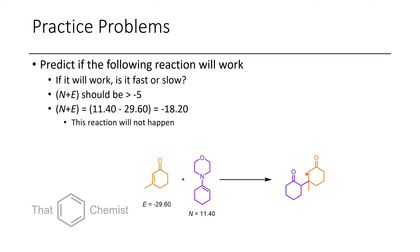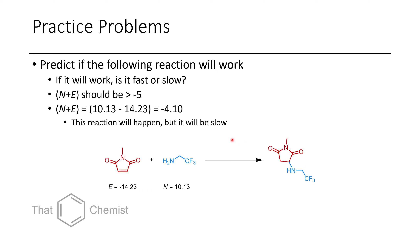So if we wanted to make this product, we'd have to do it using some other method. In the next reaction, we have this maleimide with this primary amine. With a nucleophilicity value of 10.13 and an E of minus 14.23, we'll have a sum of minus 4.1. As this is within our range of acceptable N plus E values to see a reaction kinetically occurring, we would expect this reaction can work — however, it'll be slow.